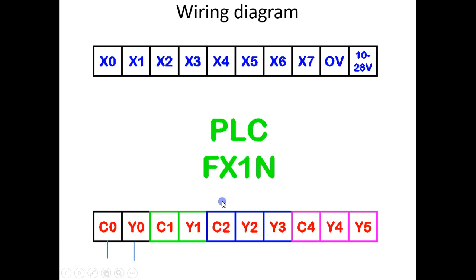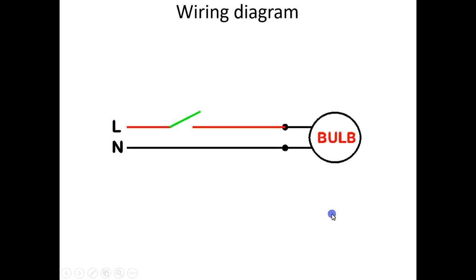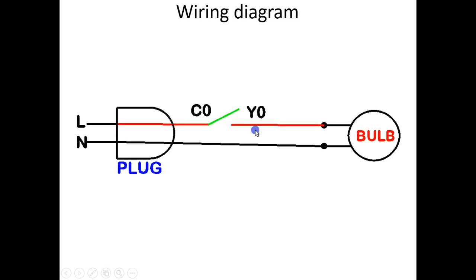This switch is nothing but the relay in the PLC. C0Y0, C1Y1, C2Y2, C2Y3, C3Y4, or C3Y5 — they act as switches. Instead of a manual switch, you are using the relay available and present in the PLC for giving the connection and switching on the bulb. This is how you give the connection.